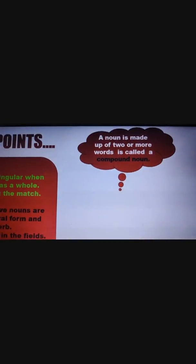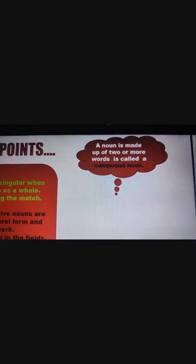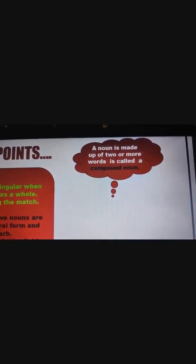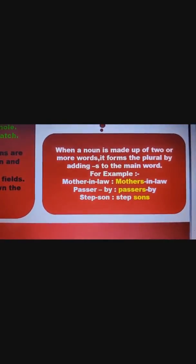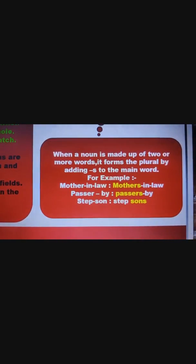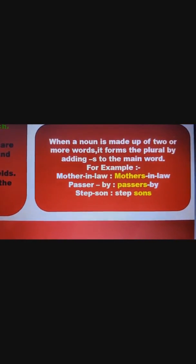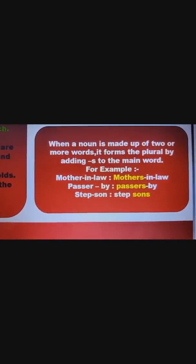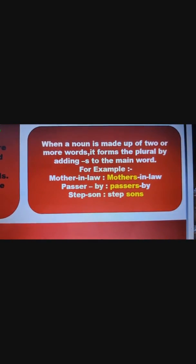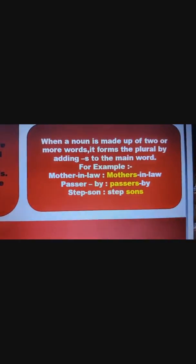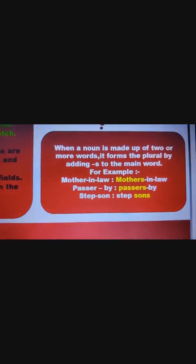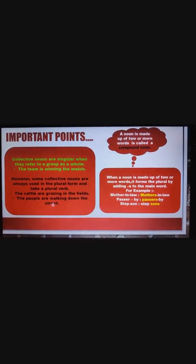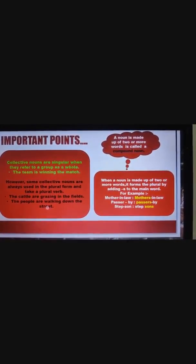A compound noun is a noun made up of two or more words. When forming the plural, we add S to the main word. For example: mother-in-law / mothers-in-law, passerby / passersby, stepson / stepsons — the main word here is 'son,' so we make it 'sons.' Some collective nouns are always plural; a noun made up of two or more words is a compound noun.